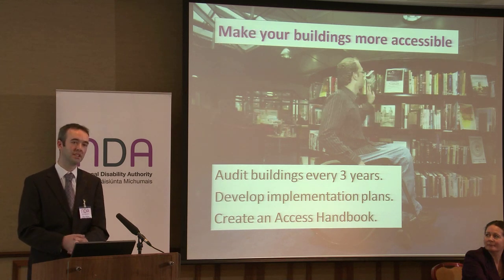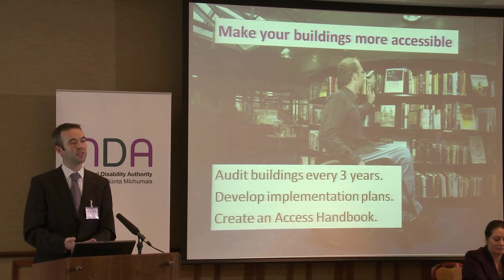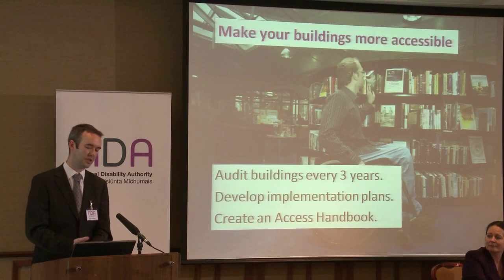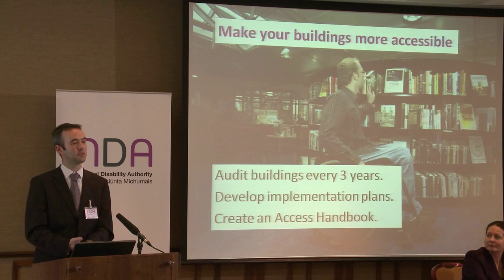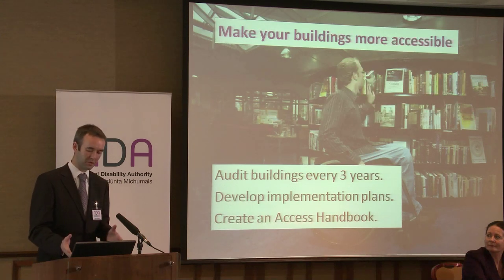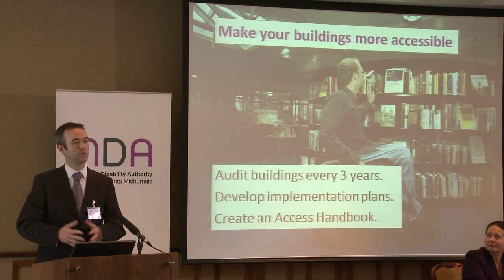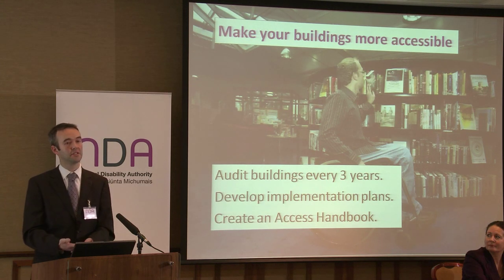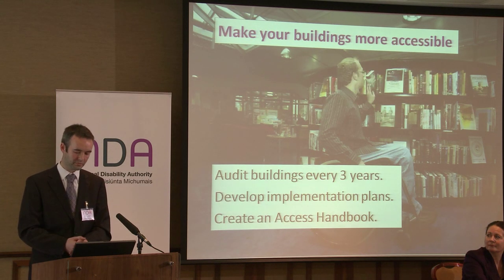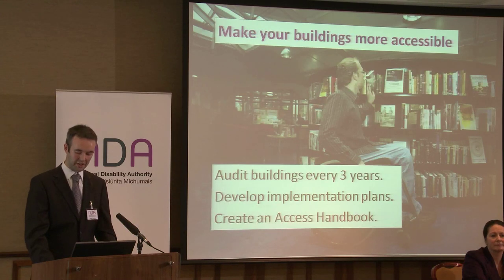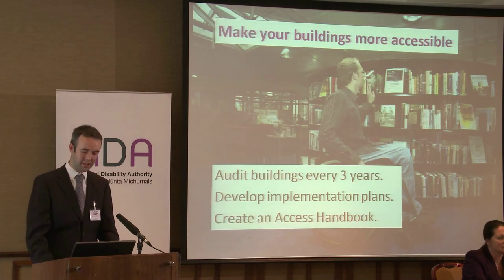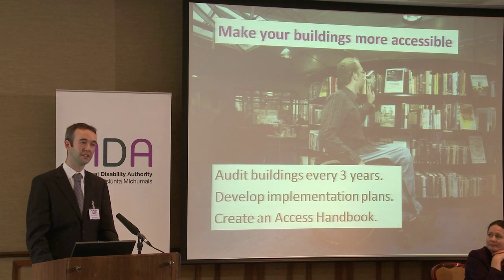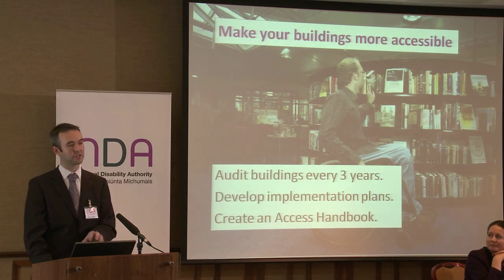We also like to see access handbooks — these are living documents that contain regularly updated information about everything to do with accessibility and your building. For example, a list of rules that keep the building accessible: don't store photocopiers or photocopier paper in the middle of your corridor because some people need the full width as they're travelling. You might write in your access handbook that cleaners are not to store vacuum cleaners in the accessible toilet. We have a full template for the access handbook — it's a straightforward Word document you can download and tailor to your own organisation.